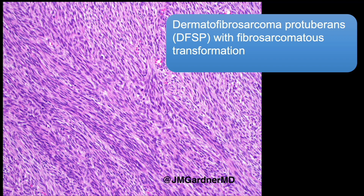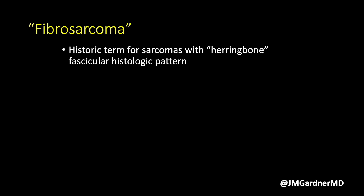This is what we want to see for fibrosarcomatous transformation. Occasionally I'll see DFSPs that have areas that are cellular and seem a bit more than regular DFSP but don't quite make the herringbone pattern. I've sometimes had to comment in my report that there's an area of increased cellularity that could potentially represent early fibrosarcomatous change but is not definitive. I've encountered a few cases like that and don't feel there is a great answer for them.